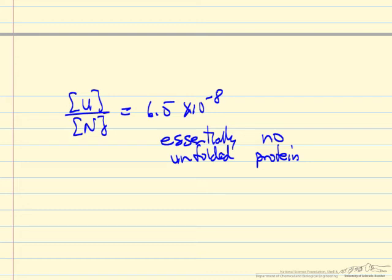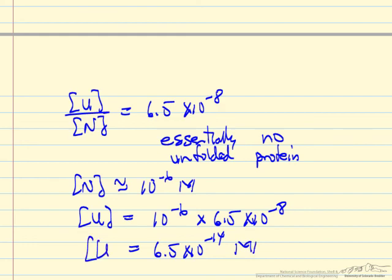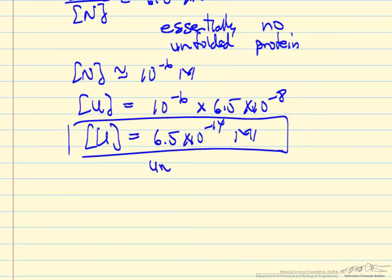If we wanted to calculate the concentration, since N is pretty close to 10 to the minus 6 molar, then U equals 10 to the minus 6 times 6.5 times 10 to the minus 8. Our concentration is 6.5 times 10 to the minus 14 molar. This is the concentration of unfolded protein, which is really insignificant. We conclude that under these conditions and temperature, all the protein is folded.